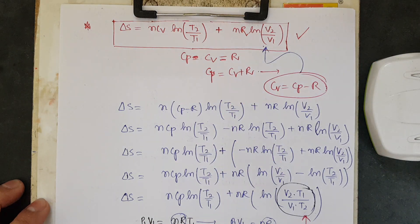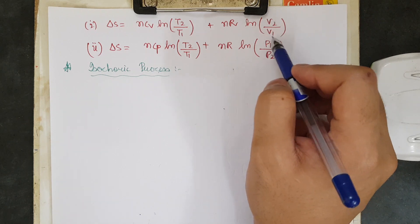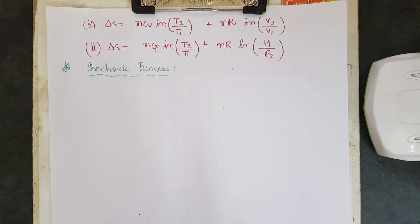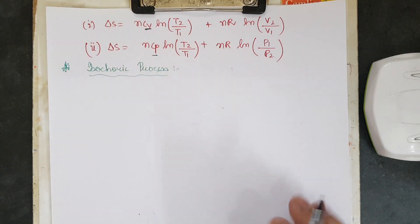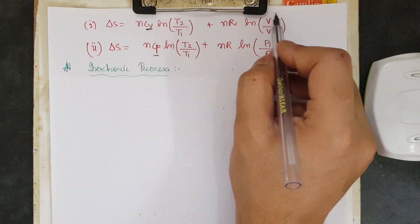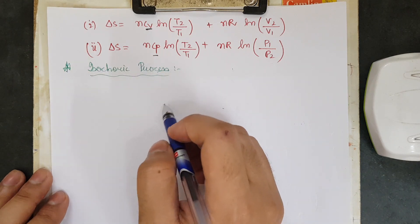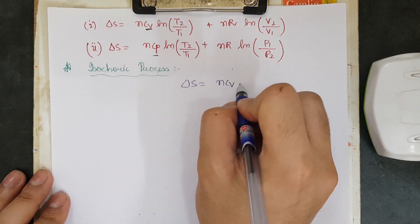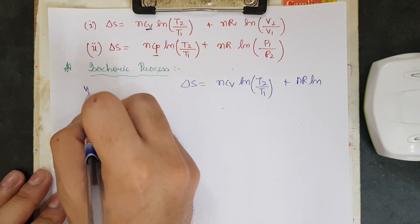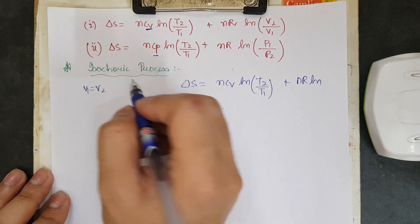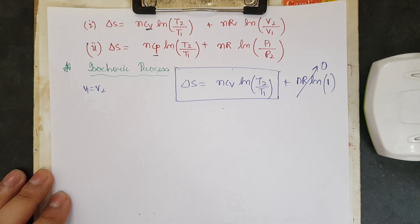Now let us apply these equations to specific thermodynamic processes. For isochoric processes, V1 equals V2, so ln(V2/V1) equals ln 1 equals 0. Therefore delta S equals NCV ln(T2/T1).